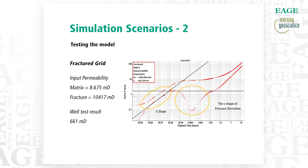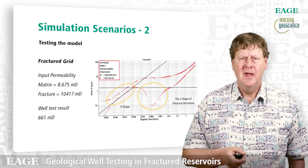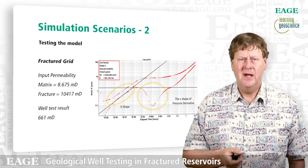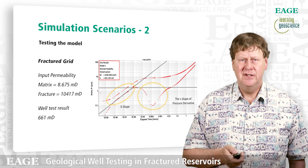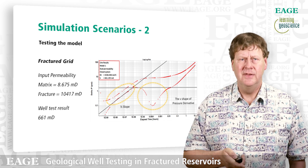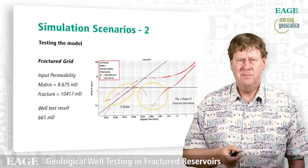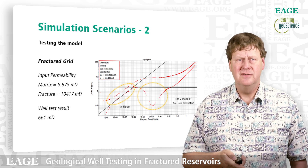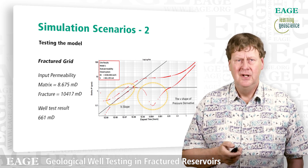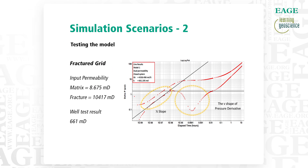Then we put our fractures in and see a very different derivative response. We see a half-slope on the left-hand side — that is a finite conductivity fracture — and then the distinctive V shape in the middle of the plot. If you were to interpret that, you would get a well-test permeability of 660 millidarcies, which doesn't relate either to the fractures or to the matrix alone, but to some combination of those.